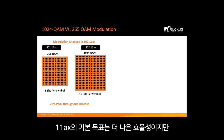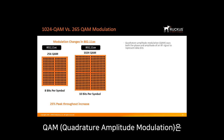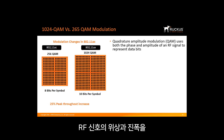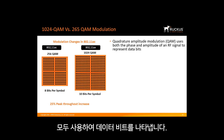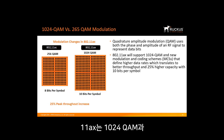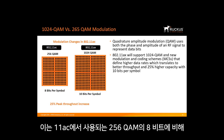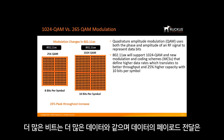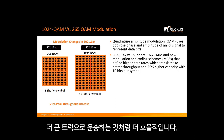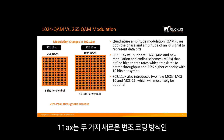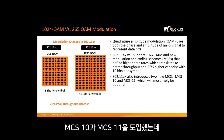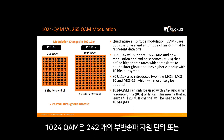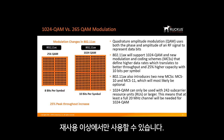Although the primary goal of 11ax is better efficiency, more speed isn't a bad thing. Quadrature Amplitude Modulation, abbreviated QAM, uses both phase and amplitude of an RF signal to represent data bits. 11ax will support 1024 QAM and new modulation coding schemes, or MCSs, that define higher data rates — translating to 25% higher capacity with 10 bits per symbol versus 8 bits in 256 QAM used in 11ac. 11ax also introduces two new modulation coding schemes, MCS10 and MCS11, which will most likely be optional. 1024 QAM can only be used with 242 subcarrier resource units or larger, meaning at least a full 20 MHz channel is needed.